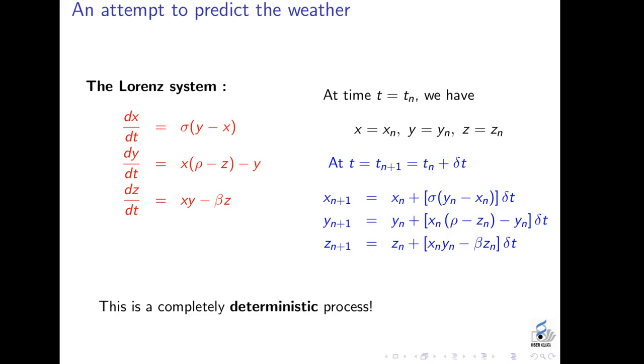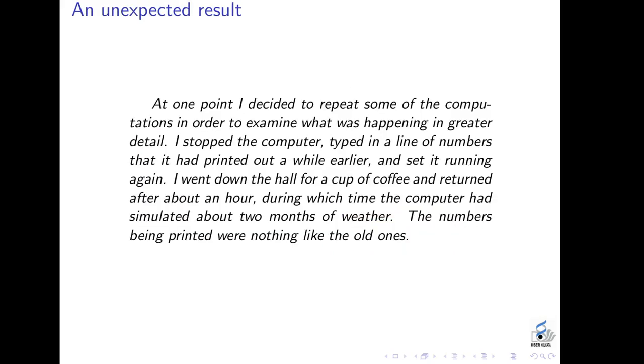In Lorenz's words: At one point, I decided to repeat some of the computations in order to examine what was happening in greater detail. I stopped the computer, typed in a line of numbers that it had printed out a while earlier and set it running again. I went down the hall for a cup of coffee and returned after about an hour, during which the computer had simulated about two months of weather. The numbers being printed were nothing like the old ones. In other words, by stopping his program in the middle and starting from the point where he stopped, Lorenz ended up with entirely different numbers than the ones he would have had if it continued from the beginning without stopping.